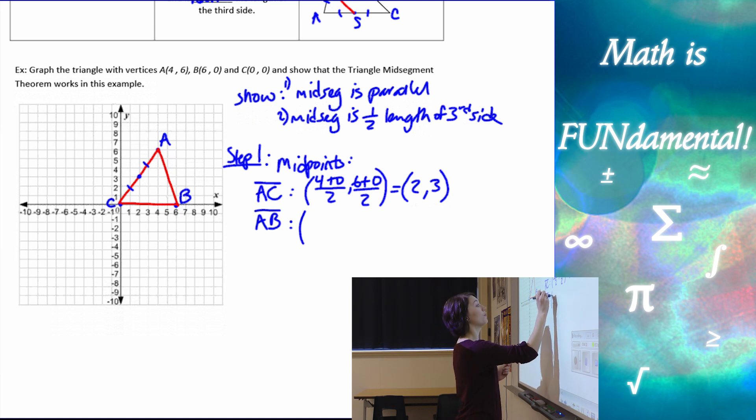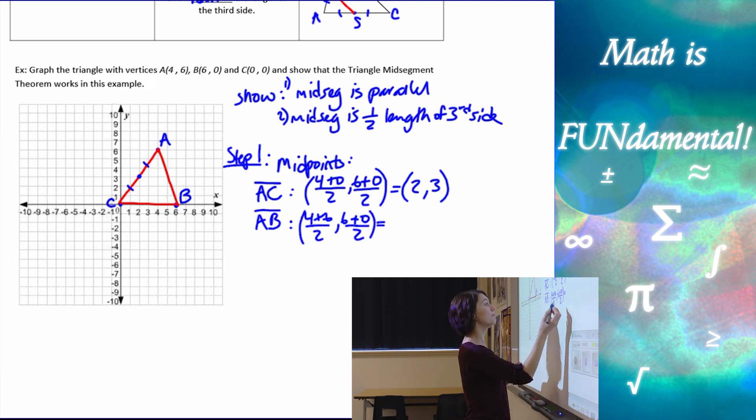So I have 4 plus 6 divided by 2, and 6 plus 0 divided by 2, using our mid-point formula, which is going to be the point 5, 3. So on my graph, if I graph 5, 3, that's going to be right there, and that definitely looks like the middle to me.